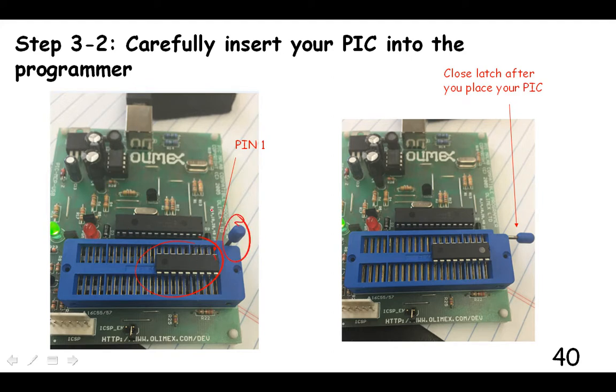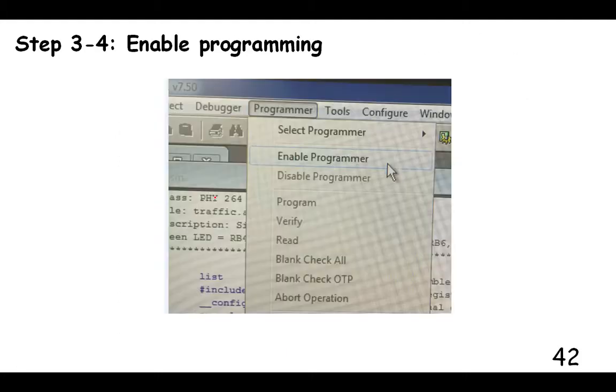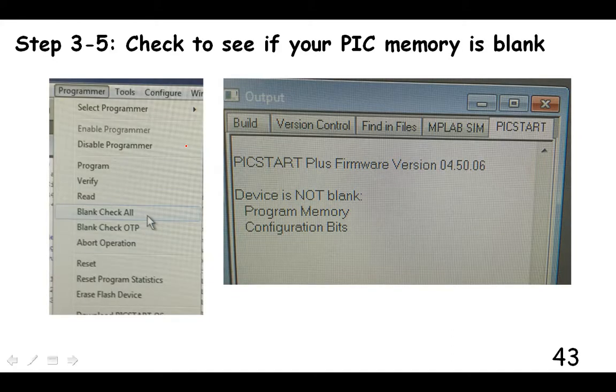Okay. So we pop our microcontroller into the programmer with pin one here. And this thing has to be up so that it'll allow for the insertion of our microcontroller. Then you press that little lever down and it's holding it in there and making good connection. Then we go into MPLAB or whatever that program was called, go into programmer and select kickstart plus to enable the programming of your microcontroller in that program thing. And then we want to see if there's any program that's already in there. Because if it is, we won't be able to program it.